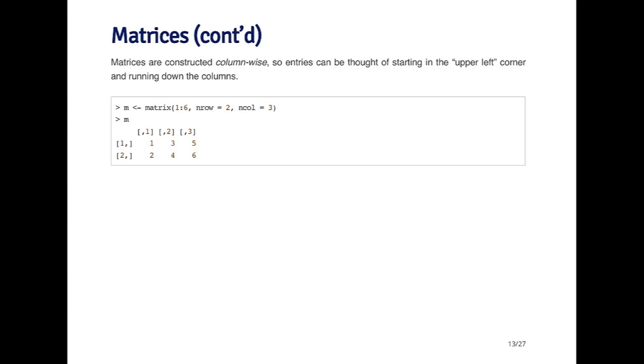If I create a matrix by taking the sequence one to six, and then specify that it has two rows and three columns, how does this matrix get constructed? It gets constructed column-wise, so the first thing that happens is it takes one, two,